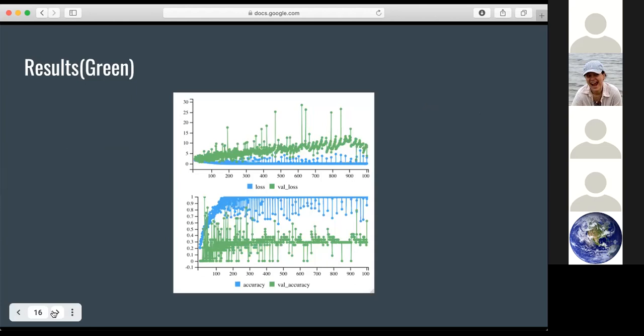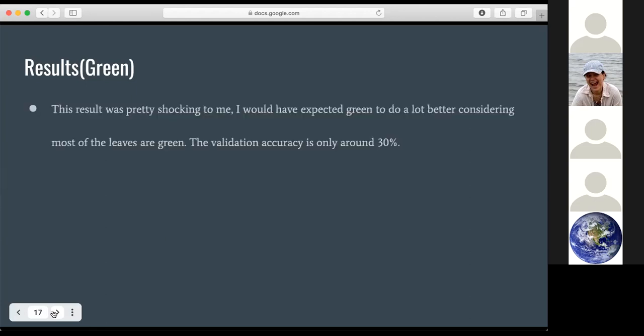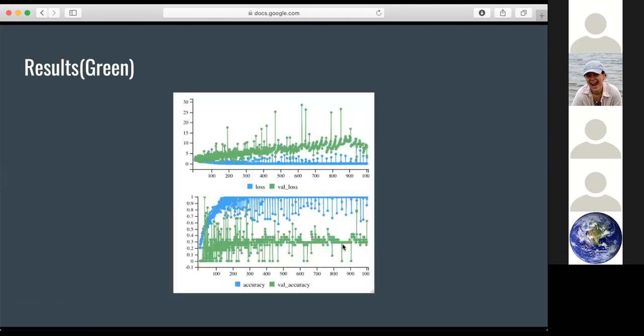This is the accuracy for green. This is pretty shocking because I would have expected green to do a lot better, considering that most of the leaves are green. So I would assume that green will be a better color and the validation accuracy you can see is only around 30%.